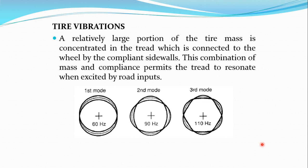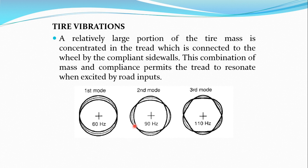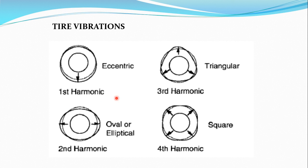At the first mode — the lowest mode of frequency — the tire changes only in the vertical direction. At the second mode it changes in both lateral and longitudinal directions. For a passenger car, the general frequencies considered are approximately 60 Hz for the first mode, 90 Hz for the second mode, and 110 Hz for the third mode. These data are taken from references.